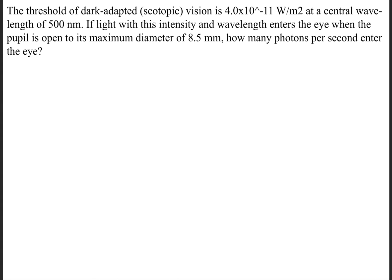We'll begin answering this question by first finding the energy at the eye — this will be our E sub 1. In order to find that, we're given this intensity value, and the intensity is simply a watt, or a power per square meter. We were told that it's 4.0 times 10 to the negative 11th watts per meter squared. This will be our intensity value right here.